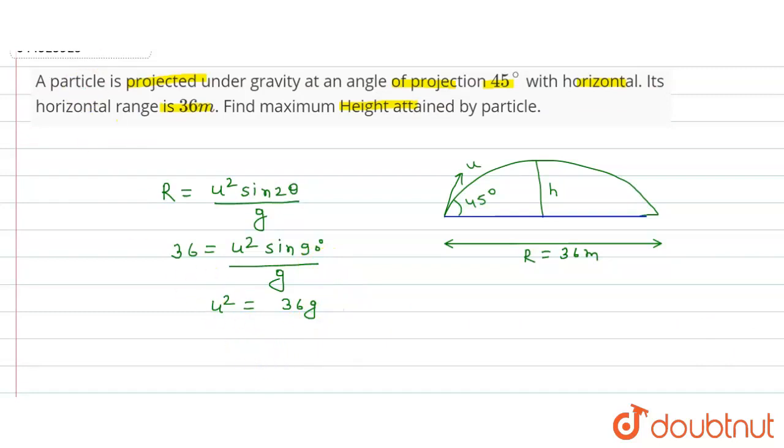Now see the formula of height H is equal to u² sin²θ upon 2g. So now put the value here: u² is equal to 36 into g.